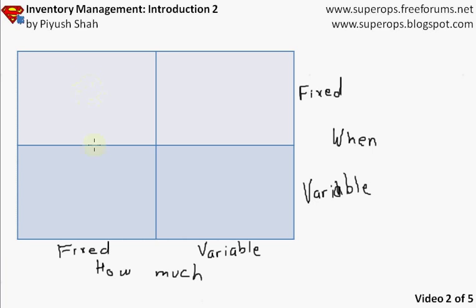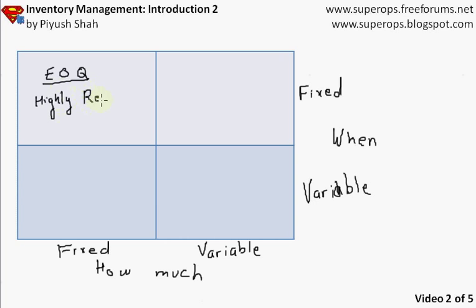When how much is fixed and when is fixed, these are our traditional Economic Order Quantity, or EOQ-based systems. This is applicable only in cases of highly reliable systems — when demand is highly reliable and supply is highly reliable. For example, in cases where milk is delivered to our home, every day we have a fixed quantity coming at a fixed time.